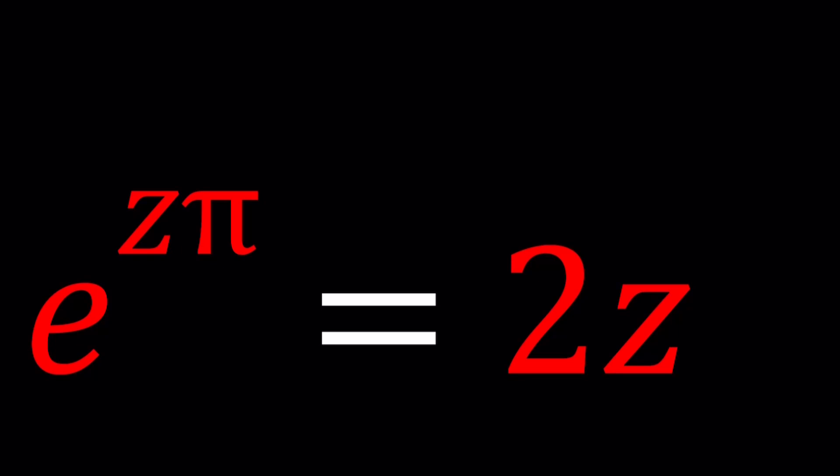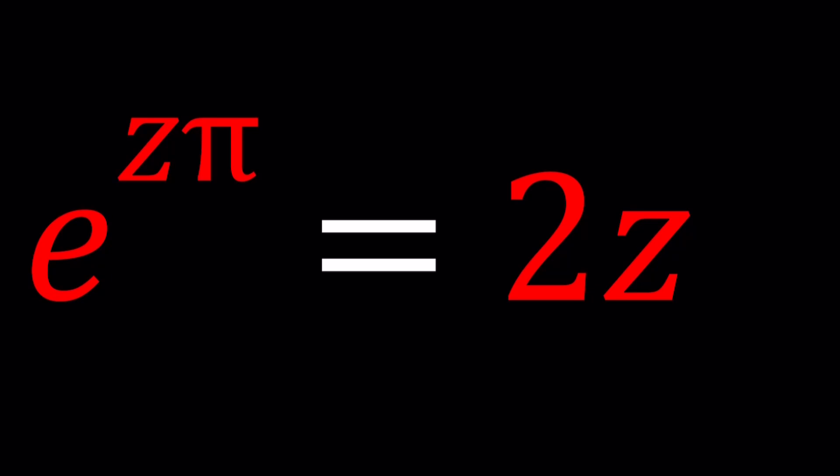We have e to the power zπ equals 2z or not 2z. It's a common joke that I make. And we're going to solve for z. Z is the variable. Pi and e are constants, and of course 2 is a constant too. How do you solve for z? Z is in the exponent as well as appears as just a factor.